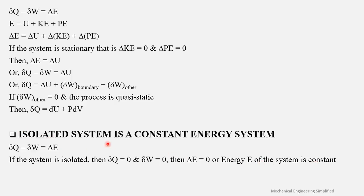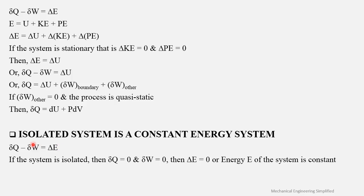Please note the notation carefully. δE represents a change between two states and can be written as E2 − E1. However, δQ and δW are path functions and cannot be expressed merely as differences between two state points — they must be integrated along the path. Therefore, the correct expression is δQ − δW = δE, not using the same delta notation for all three.